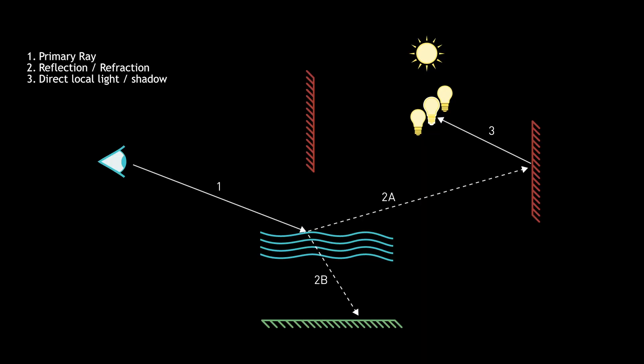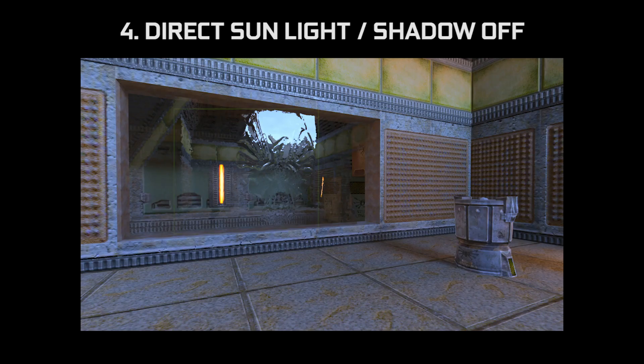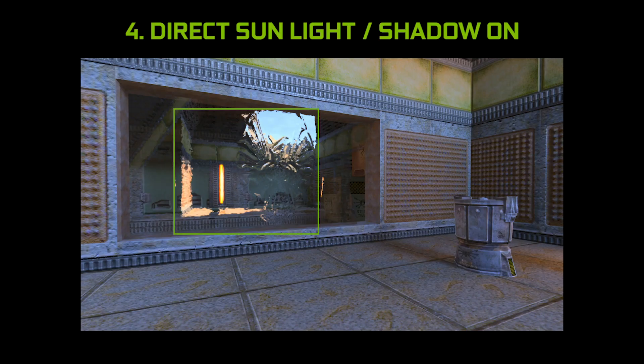In addition to sampling from the local lights, we of course sample from the sun. In the same way that we shoot a ray towards a randomly sampled local light, we do the same towards the sun, and again sample both light or occlusion for shadow to determine the proper total lighting picture for that pixel. If you look in the mirror, you'll see a bright yellow light in the back — that's those direct rays being cast to the sun and their resulting influence on the scene.